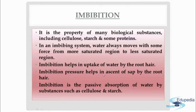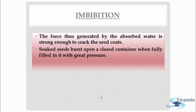Ascent of sap means the upward movement of water and dissolved salts. Imbibition is the passive absorption of water by substances such as cellulose and starch. Cellulose is the substance found in cell walls. The seeds and grains swell up due to imbibition and endosmosis when soaked in water. The force generated by the absorbed water is strong enough to crack the seed coats. Soaked seeds burst open a closed container when fully filled with great pressure. These seed coats or food grains crack when rainwater floods them.